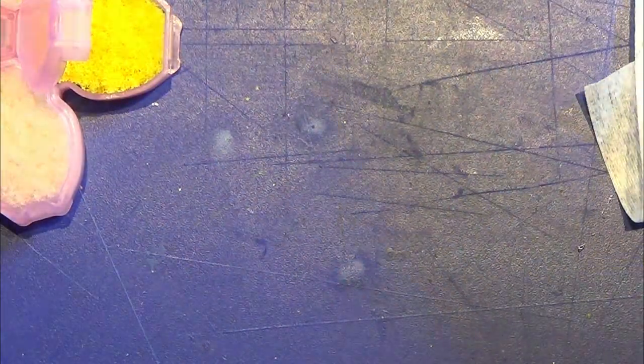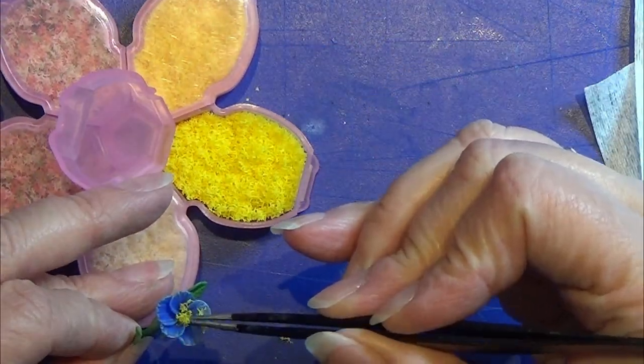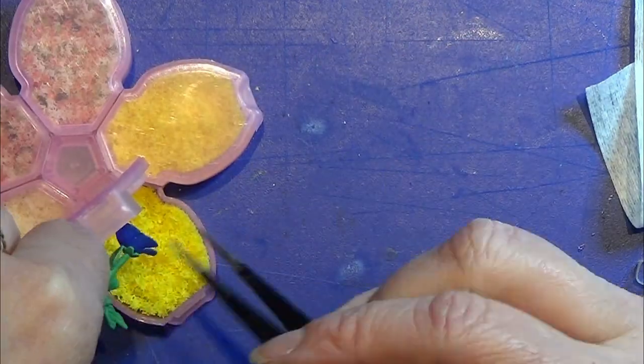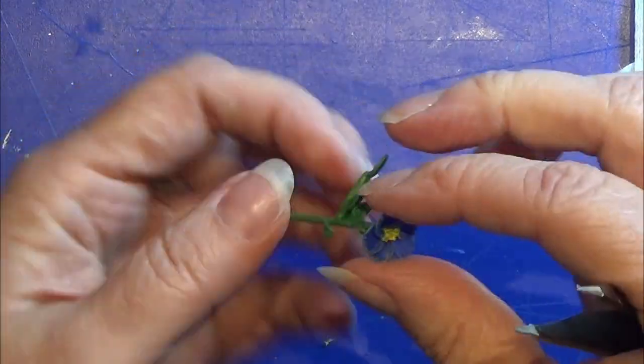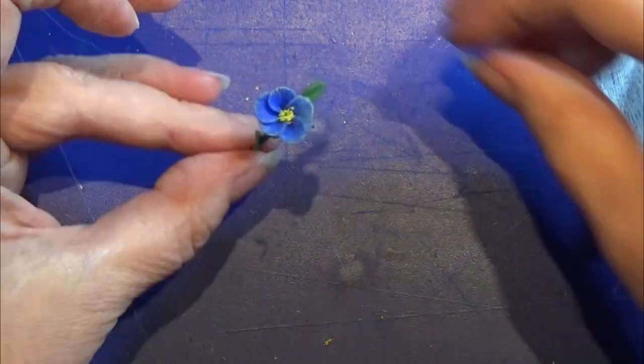Then I have these yellow flowery things. I found that in a miniature train store and I am just gluing a tiny bit of that into the middle of the flower and then it is all done.